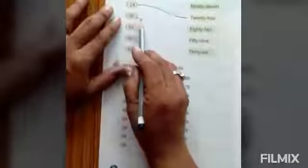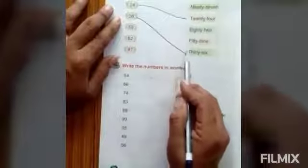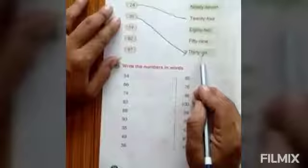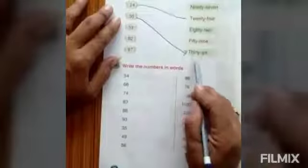Next, 36. 3, 6, 36. 36 is written over here. T-H-I-R-T-Y 30, S-I-X 6 means 36.